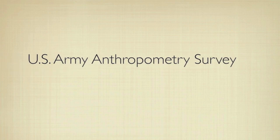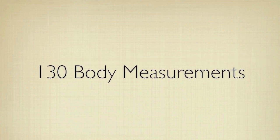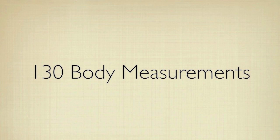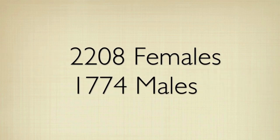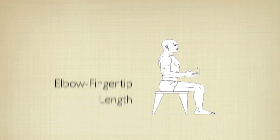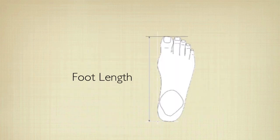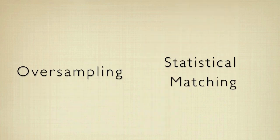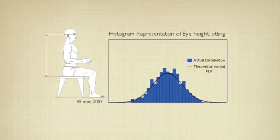The 1988 U.S. Army Anthropometry Survey, or ANSUR, is widely used for two reasons. First, it provides information about over 130 body measurements for 2,208 females and 1,774 males, making it one of the most comprehensive databases available. The second reason is the use of techniques such as population oversampling and statistical matching in its creation, which allows for future Army populations to be simulated by adjusting the demographic factors as required.